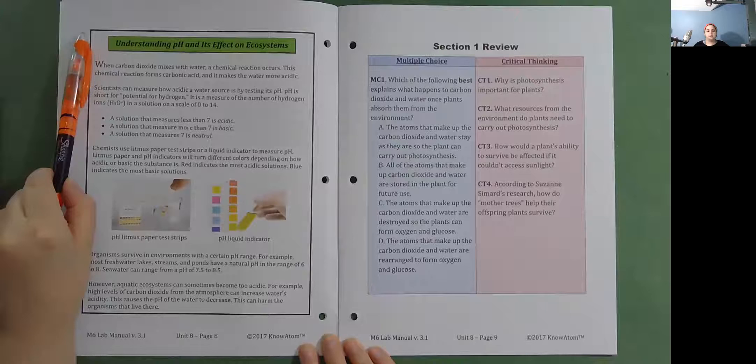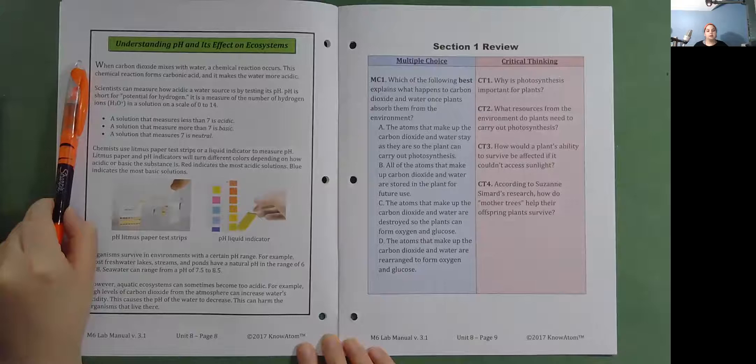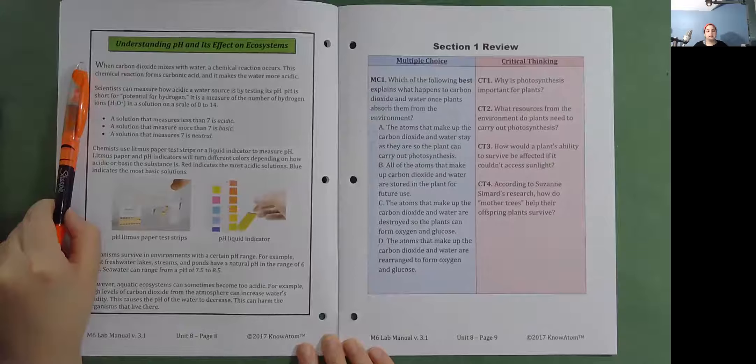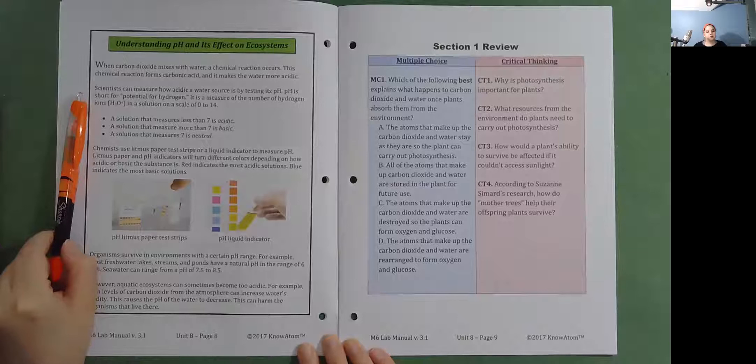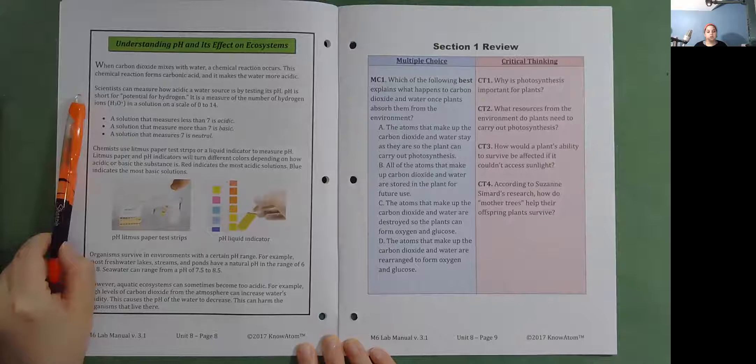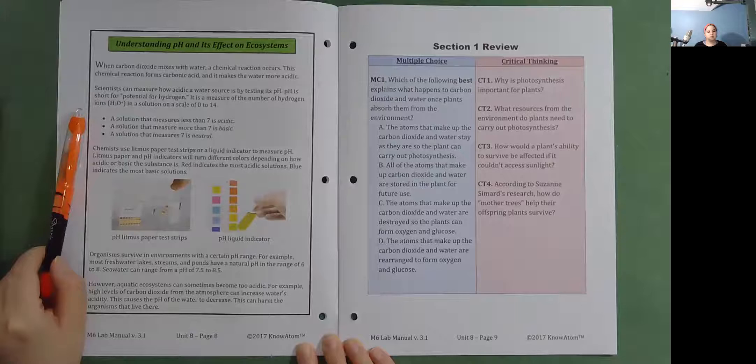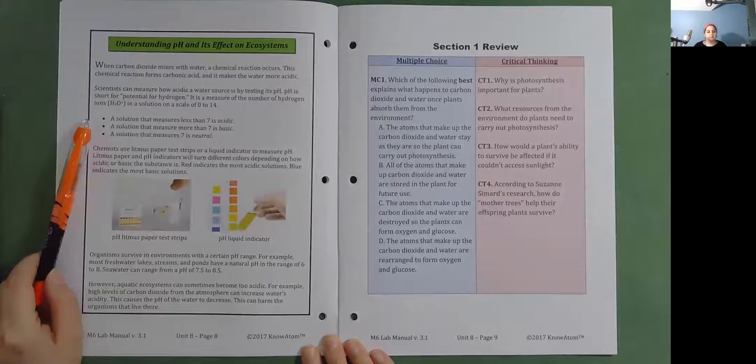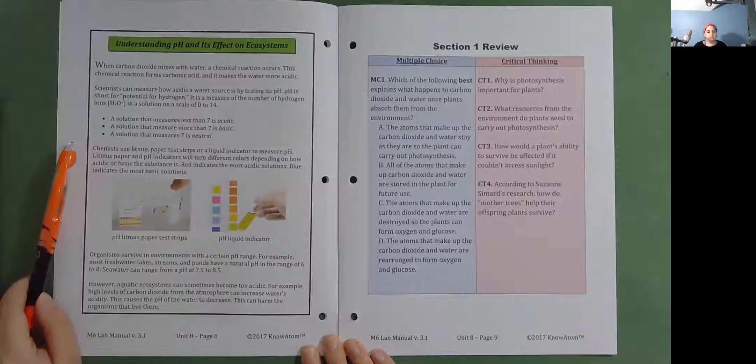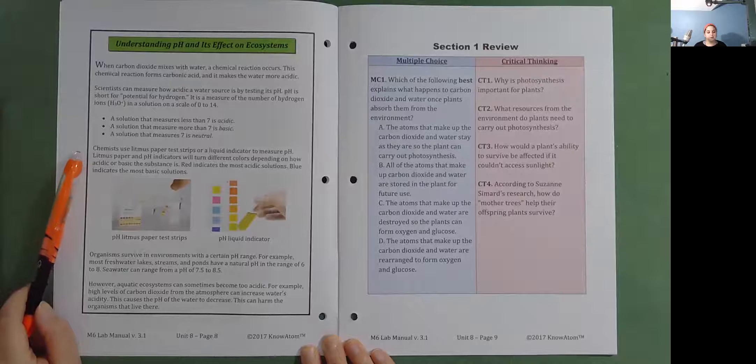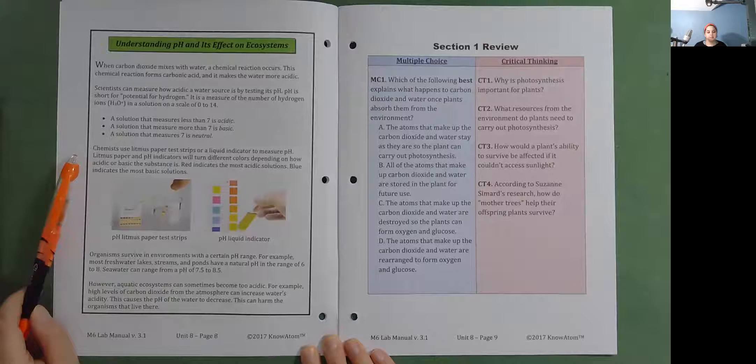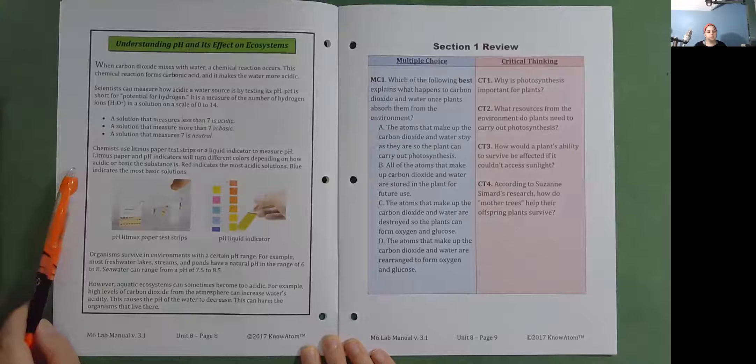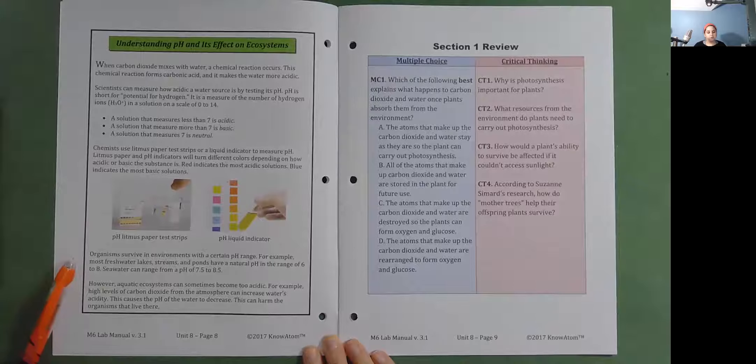Understanding pH and its effect on ecosystems. When carbon dioxide mixes with water, a chemical reaction occurs. This chemical reaction forms carbonic acid and it makes the water more acidic. Scientists can measure how acidic a water source is by testing its pH. pH is short for potential for hydrogen. It is a measure of the number of hydrogen ions in a solution on a scale of 0 to 14. A solution that measures less than 7 is acidic. A solution that measures more than 7 is basic. A solution that measures 7 is neutral. Chemists use litmus paper test strips or a liquid indicator to measure pH. Litmus paper and pH indicators will turn different colors depending on how acidic or basic the substance is. Red indicates the most acidic solutions. Blue indicates the most basic solutions.